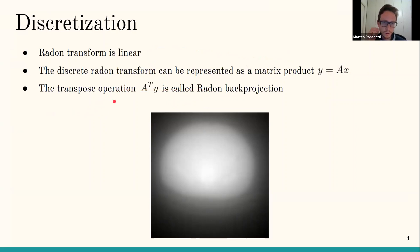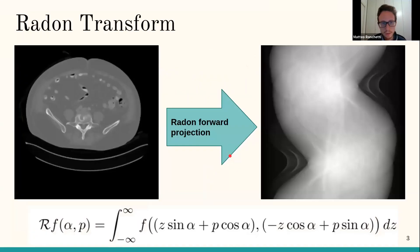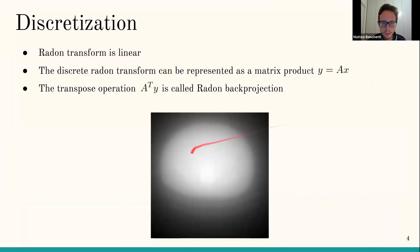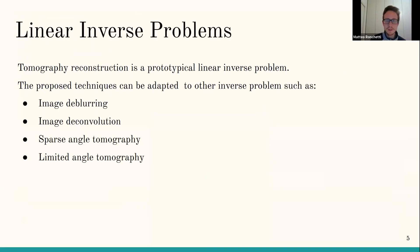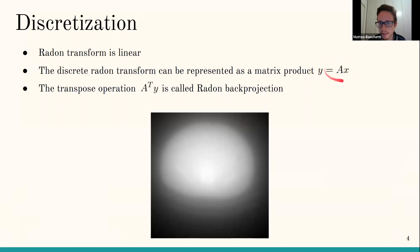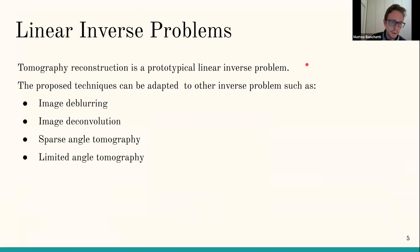Another useful operation is the Radon back projection — the transpose operation. Starting from a sinogram, forward projection gives a very blurry image; it's just a transpose, not an inversion. This problem is part of a bigger class called linear inverse problems, which includes image deblurring, deconvolution, and related tasks like sparse angle and limited angle tomography.